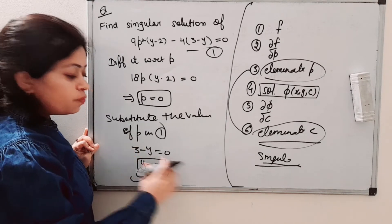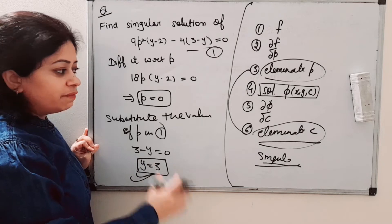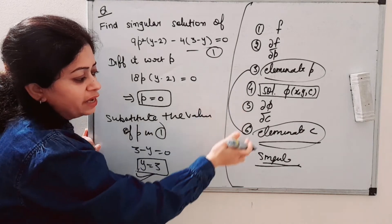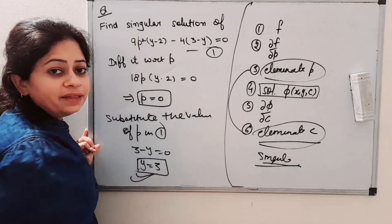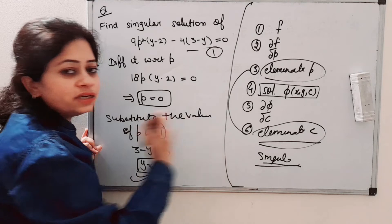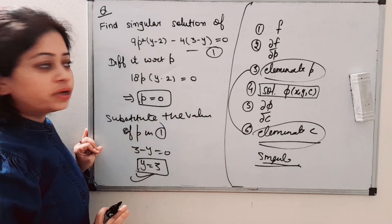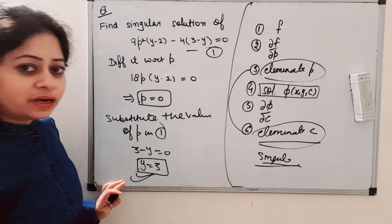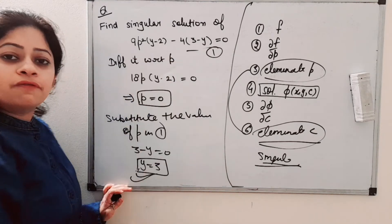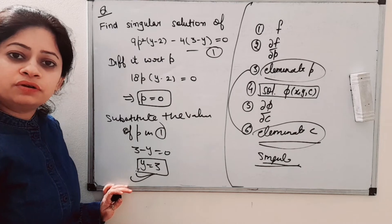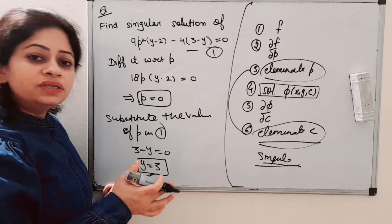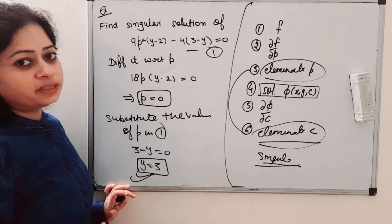If we get two or more solutions, then we move to steps 4, 5, and 6, and the common solution between steps 3 and 6 is the singular solution. I hope you are getting what a singular solution is and what the method of finding singular solution is. Now we come to the second example.